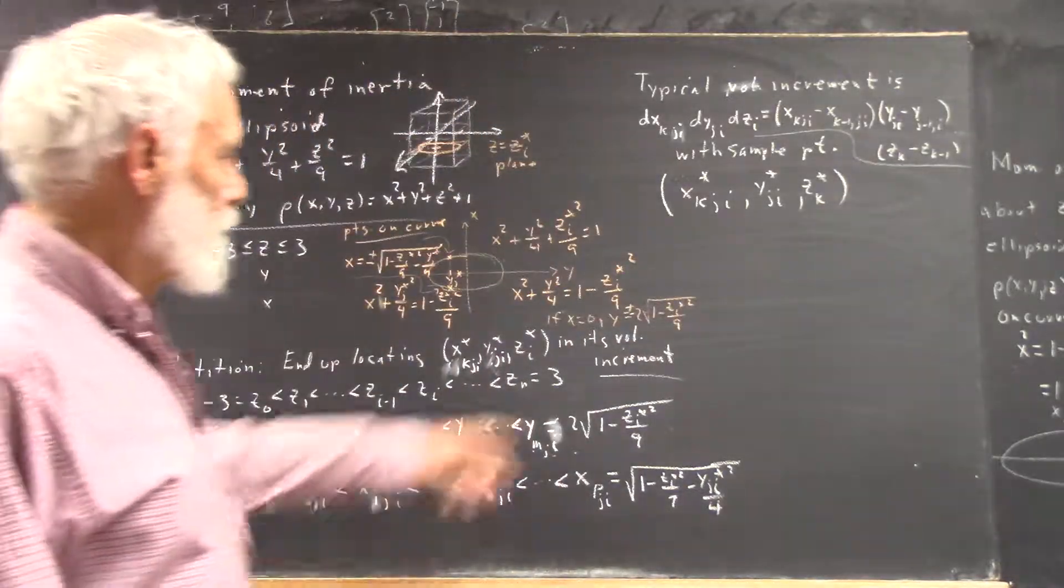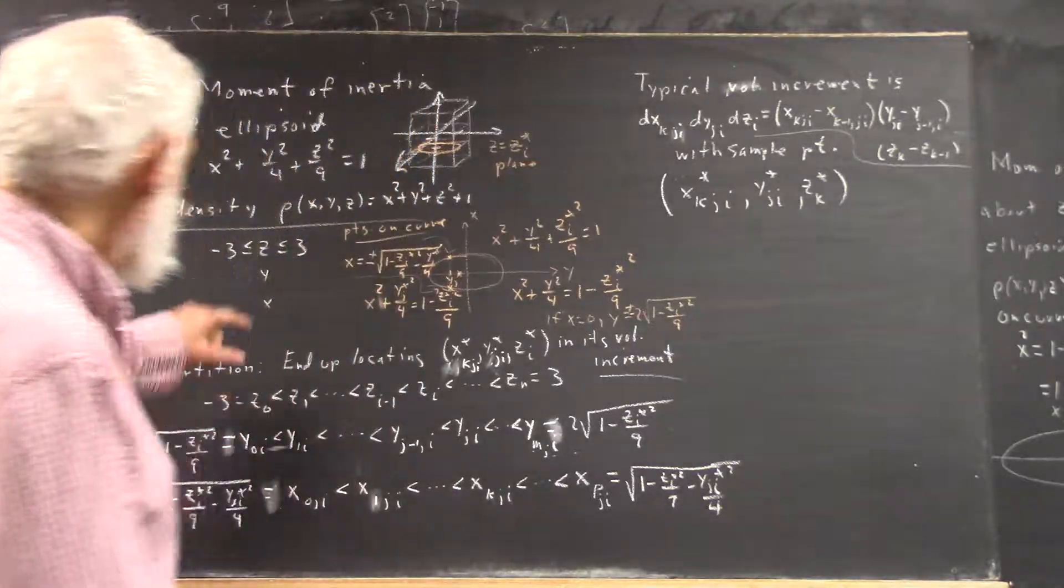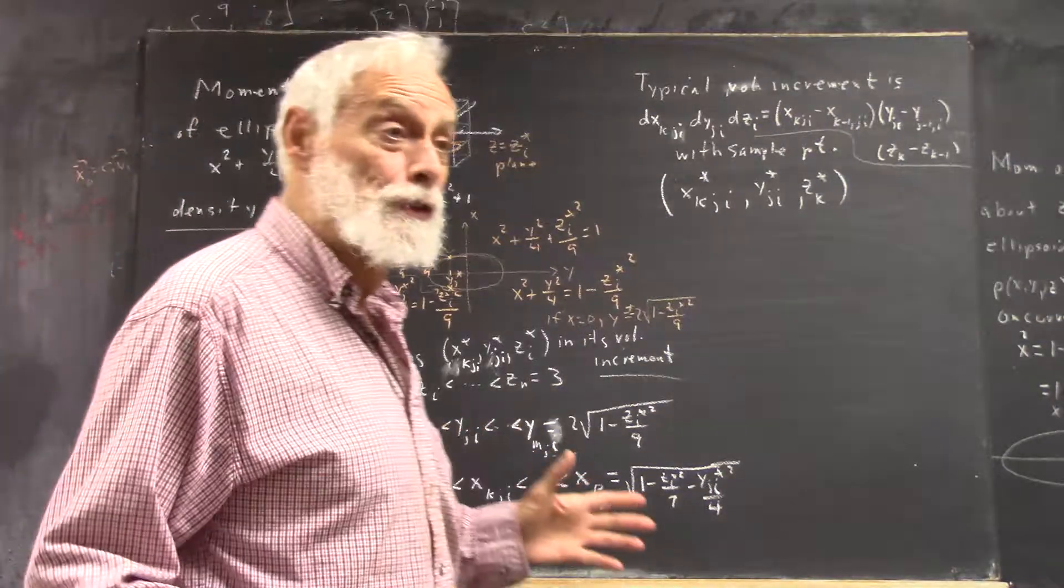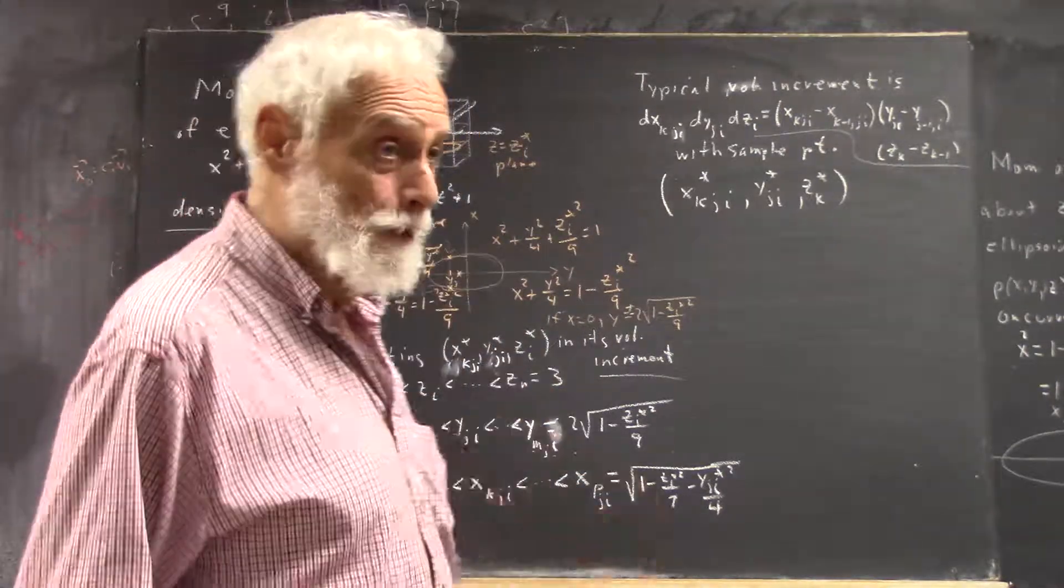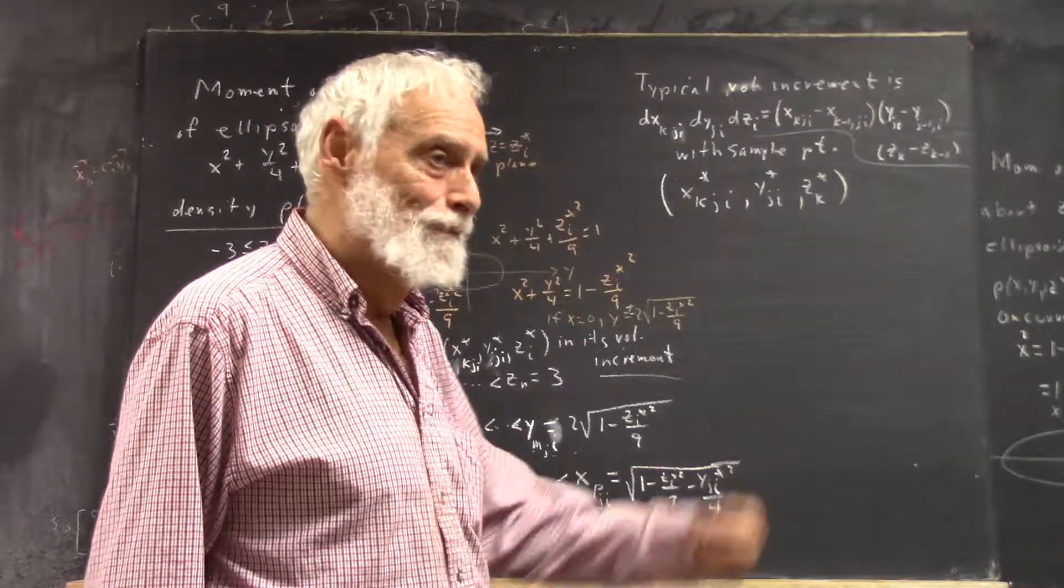Note that all the mess-ups in the subscripts would have gone away if you hadn't made me do this by partitioning the Z-axis first. But there are often good reasons to do that. For an ellipsoid, it's arbitrary. It doesn't matter which axis you start with.